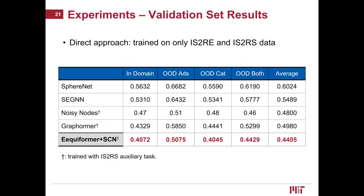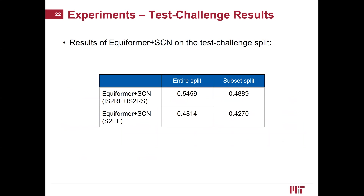We compare results on the validation set between models with the direct approach. Equiformer plus SCN achieves the lowest mean absolute errors when only IS2RE and IS2RS data are used. We also report the results on the test challenge suite. The relaxation approach achieves lower error compared to the direct approach, while training on S2EF requires about 2.6 times more computation.